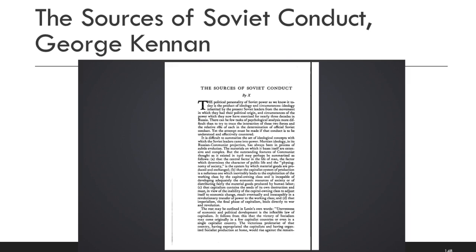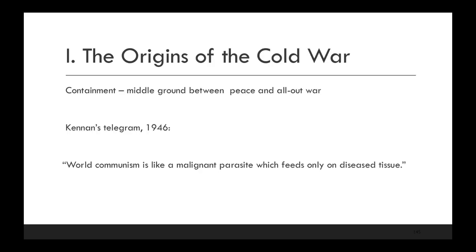George Kennan publishes the Long Telegram, a telegram he writes to get policymakers in Washington to understand that the Soviet Union really is never going to become friends with the United States. He eventually publishes elements of the Long Telegram in an article written under the name 'Mr. X' in Foreign Affairs, called 'The Sources of Soviet Conduct.' His central claim is that the Soviet Union's Marxist-Leninist ideology believes that communism is the highest political and economic system and the end state that everybody will eventually reach. So why would they want to make friends with countries their ideology tells them are inherently inferior?